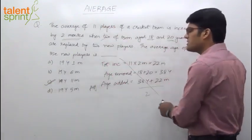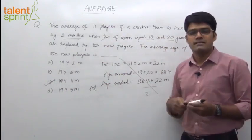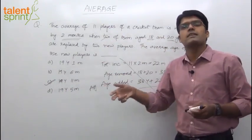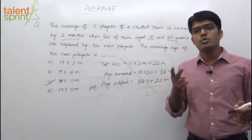And I am sure you can do this without writing anything on paper. Total increment, 22 months. Total age gone out is 38 years. So total age which should be added should be 38 years and 22 months. Only then it is balanced. 38 years and 22 months for 2 players. So the average is 19 years and 11 months.